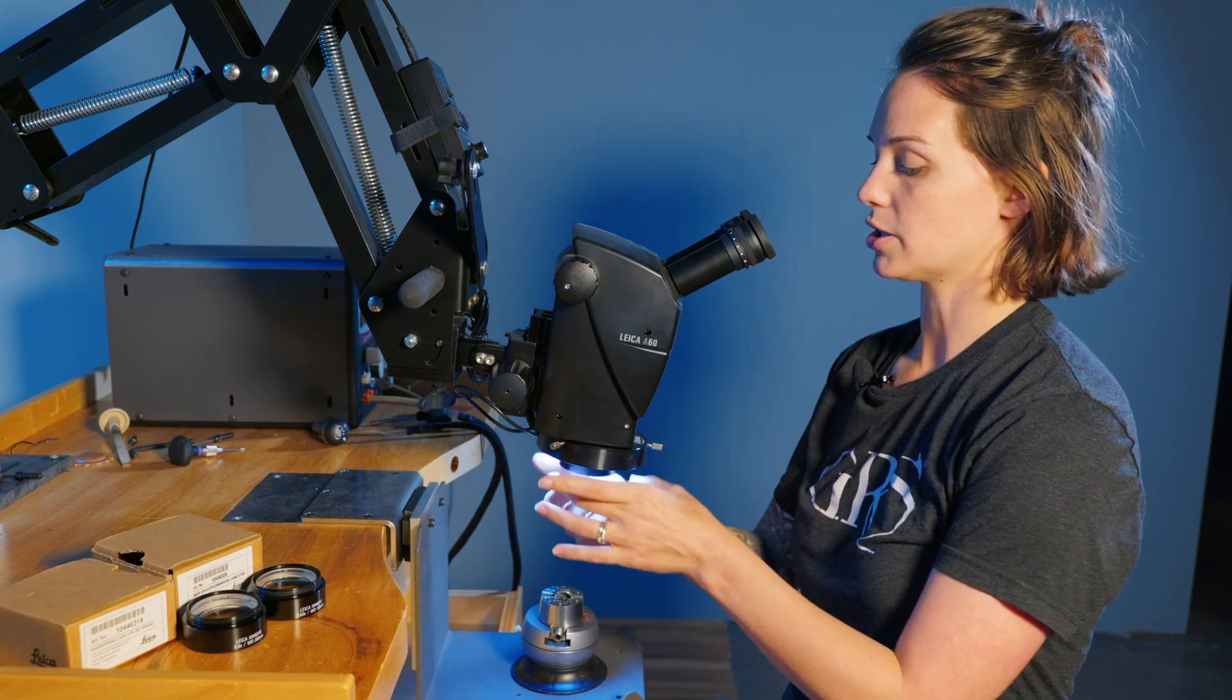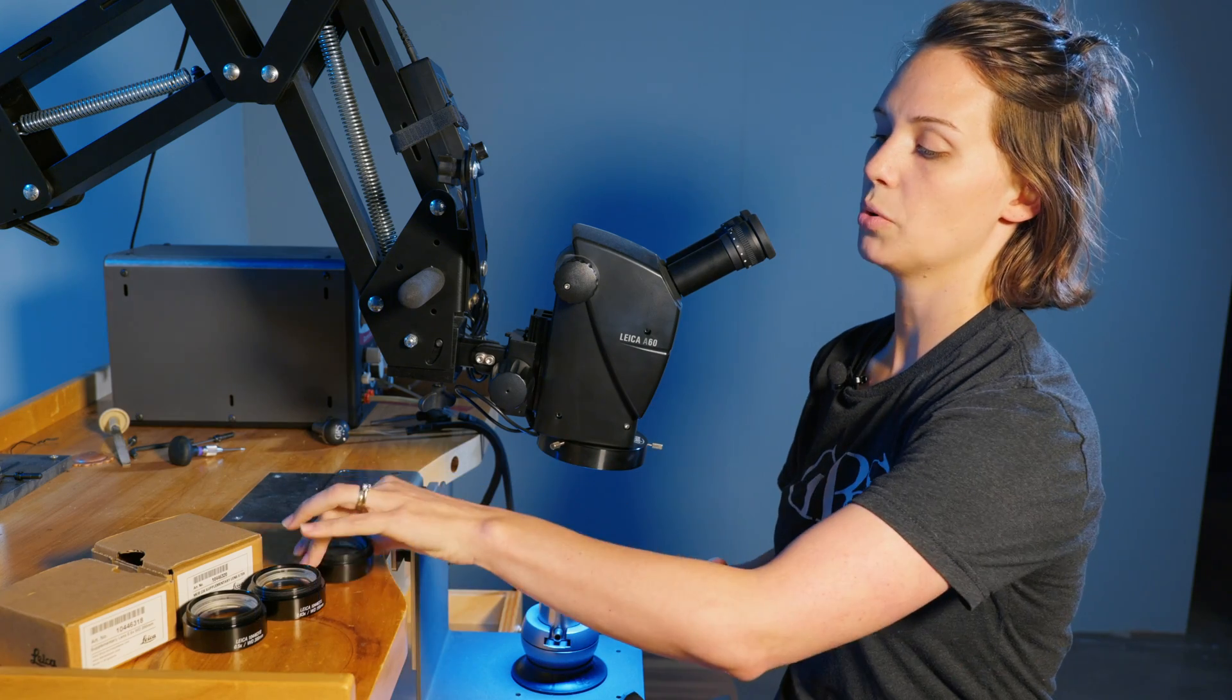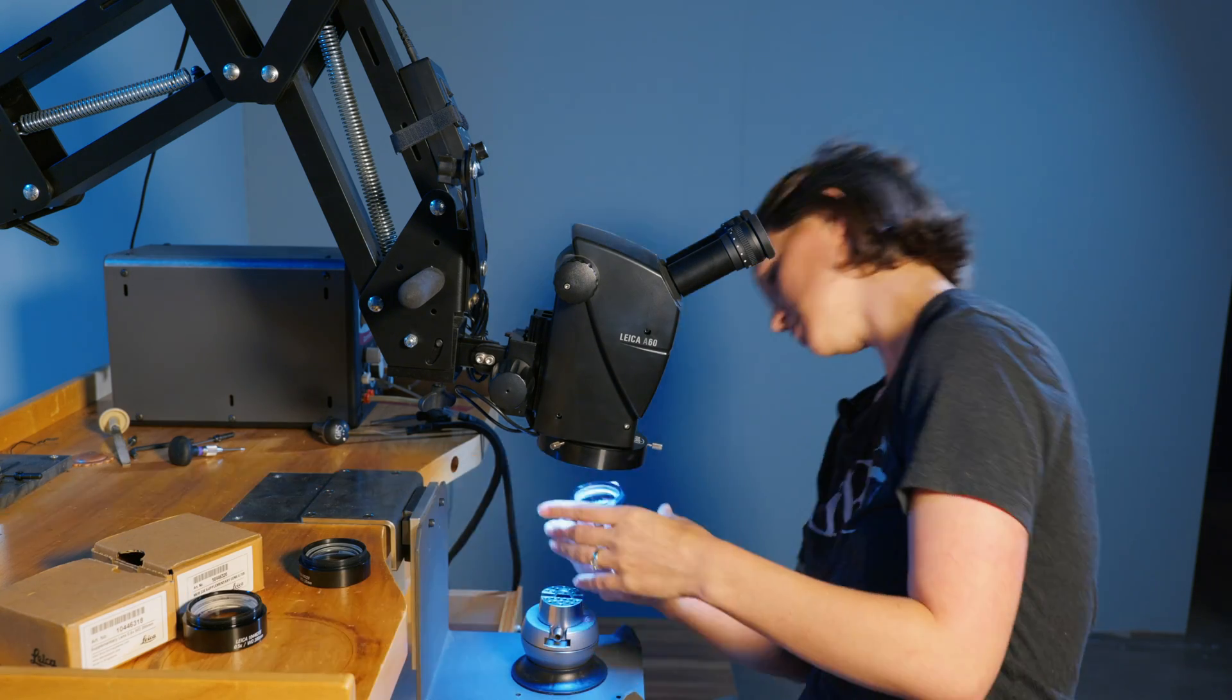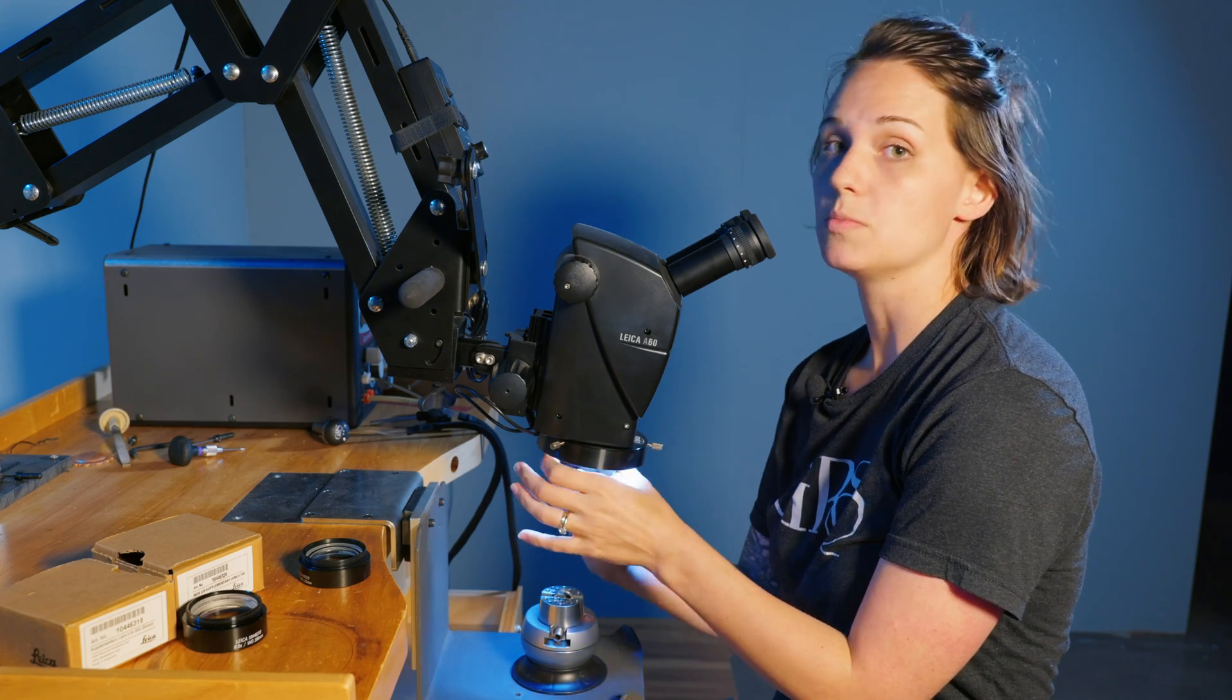If you're working on something larger, you might want to bump up to the next lens which is our 0.63. This is what we keep on all of our microscopes in the training center.